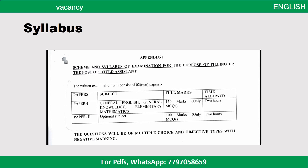In Paper 2, you will be given three optional subjects — Mathematics, Economics, and Statistics. The paper is for 100 marks and the level is up to Class 12.